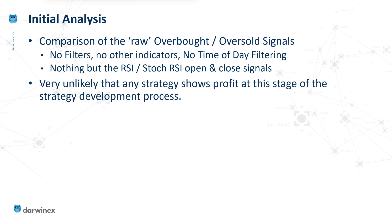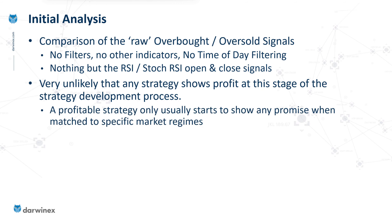It's extremely unlikely that any strategy will show a profit at this stage of the strategy development process. Usually, in order to get a profitable strategy, we need to think about matching the signals to specific market regimes. We can do that by using volatility filters, trending or ranging filters, or identifying if the market is noisy or quiet. Each of these regimes will be matched to different types of signal, but because we're not doing any of this yet, that's the reason we're not likely to see a profitable strategy at this stage.